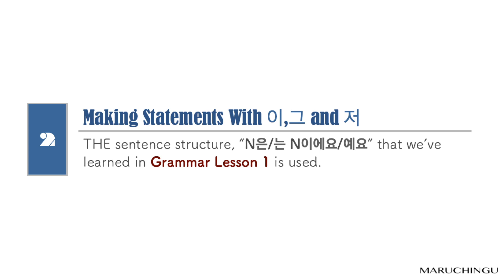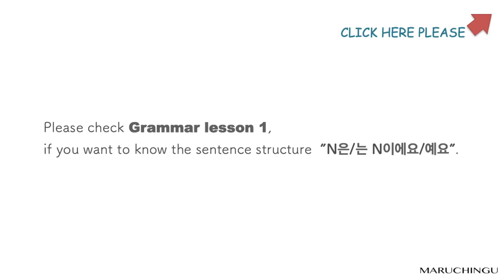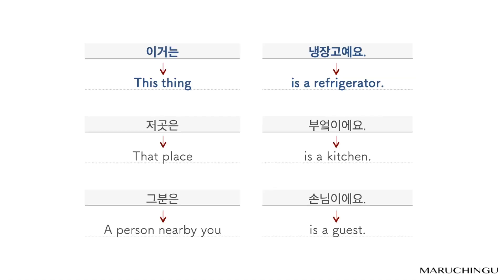The sentence structure 은/는 + 이에요/예요 that we learned in grammar lesson 1 is used here. Please check grammar lesson 1 if you want to review that sentence structure. Examples: 이거는 냉장고예요 (This is a refrigerator). 저것은 부엌이에요 (That is a kitchen). 그분은 손님이에요 (That person is a guest).